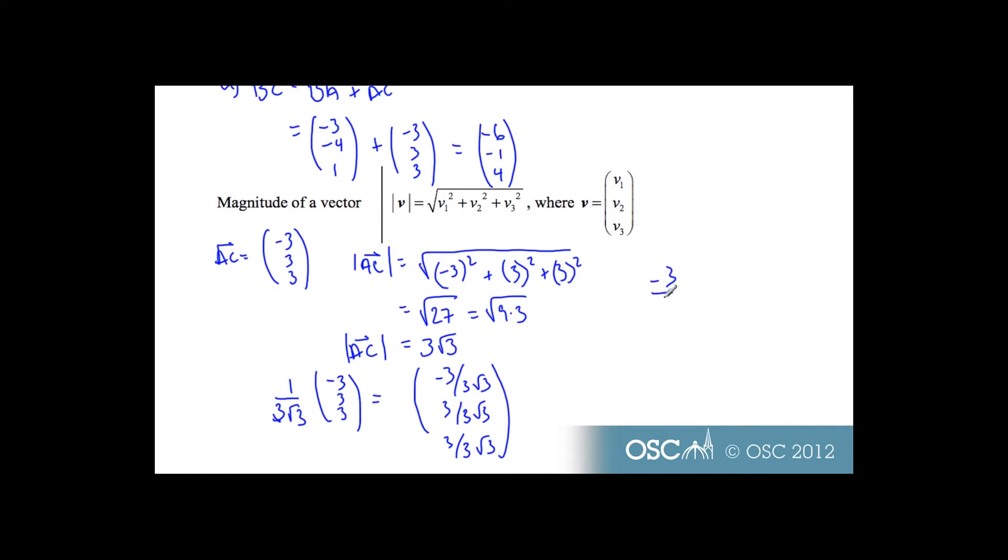Simplifying that first one, -3/(3√3), I know I can cancel out the 3s, and I'm left with -1/√3. That's bad mathematical grammar, so I'm going to multiply it by 1, which will leave the value the same but make it look different. It'll be -√3/3. And so my unit vector, in nice mathematical notation, is (-√3/3, √3/3, √3/3).